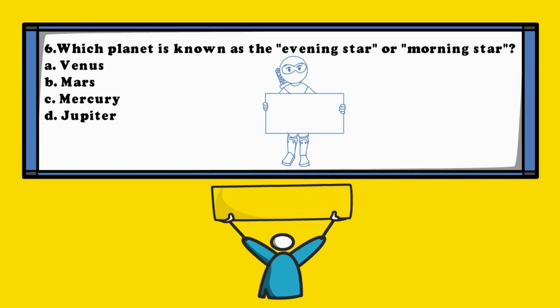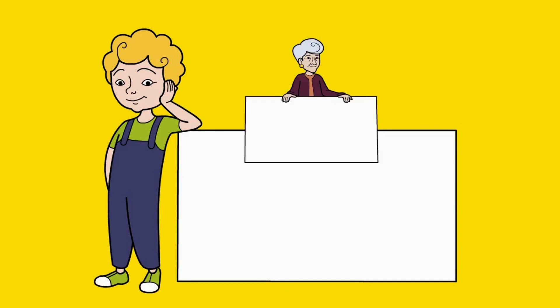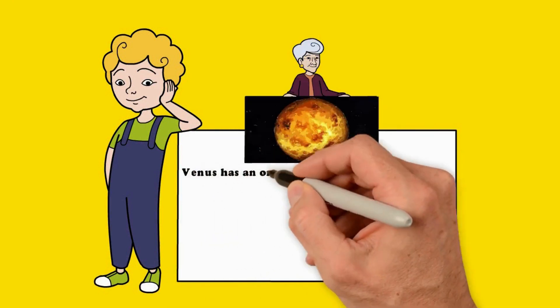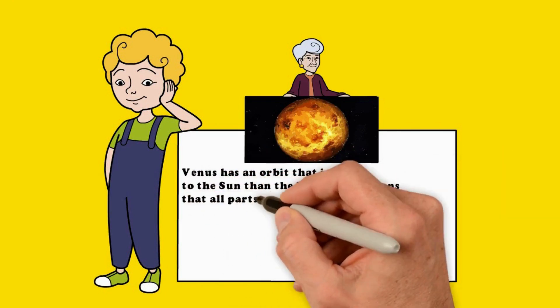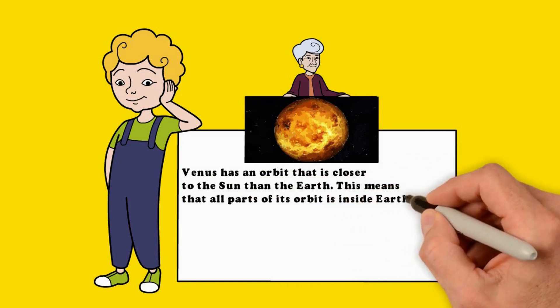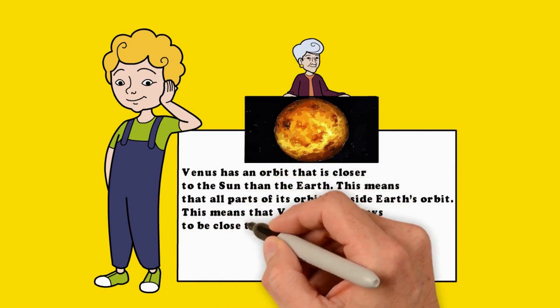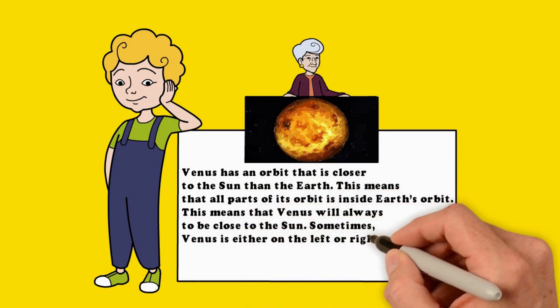The answer is A. Venus. Venus has an orbit that is closer to the Sun than the Earth. This means that all parts of its orbit is inside Earth's orbit. This means that Venus will always be close to the Sun. Sometimes, Venus is either on the left or right of the Sun as it's orbiting.